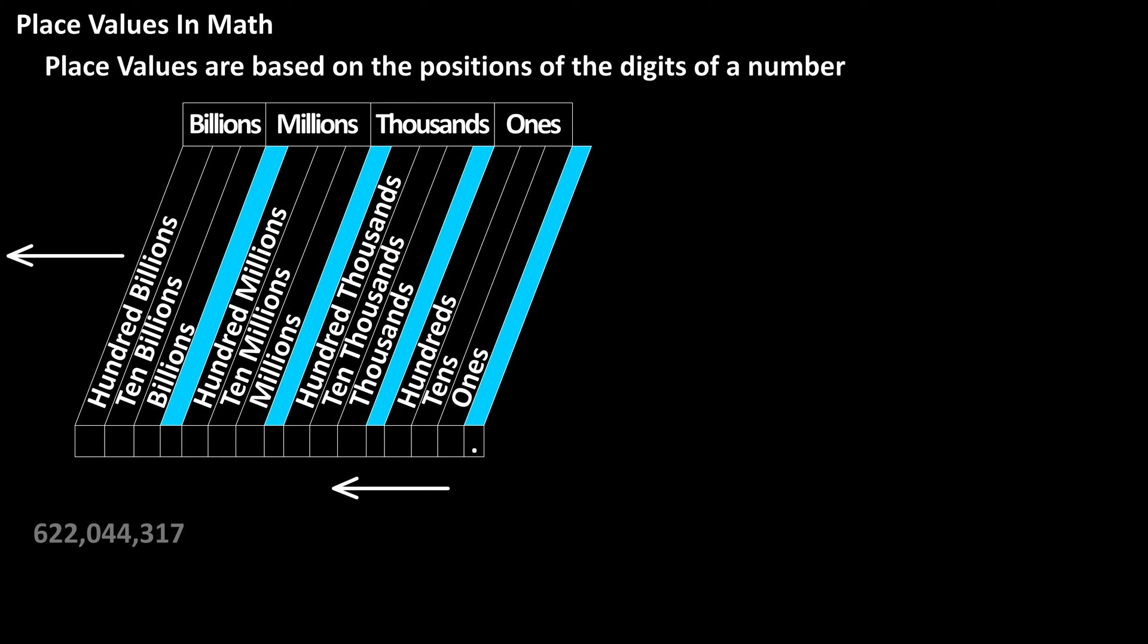As an example, the number 622,044,317. I've put the digits under their correct place value column, starting with the seven in the ones column, over to the six in the hundred millions column.